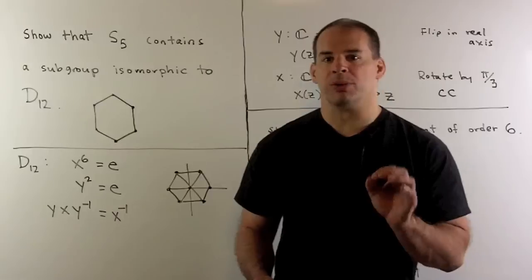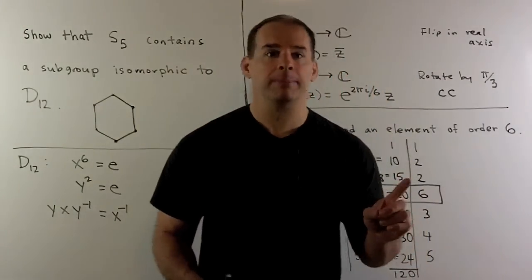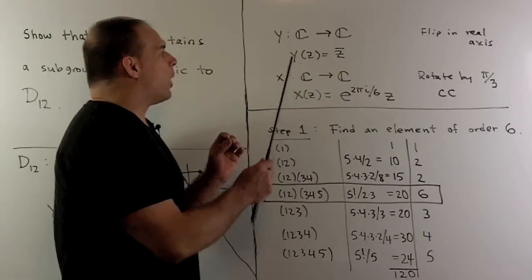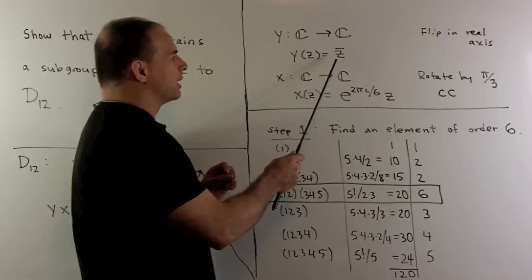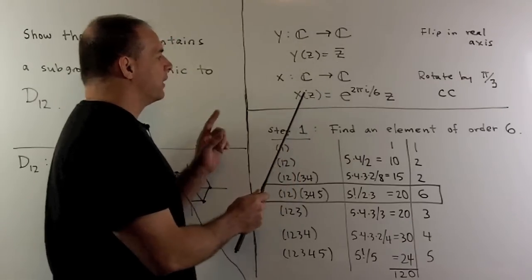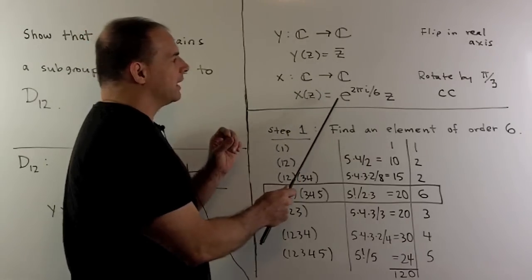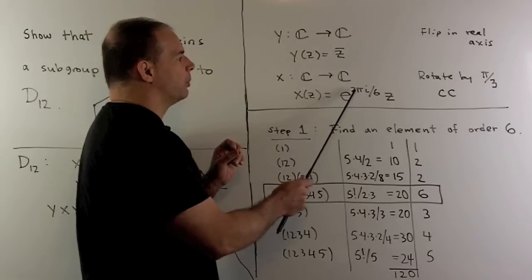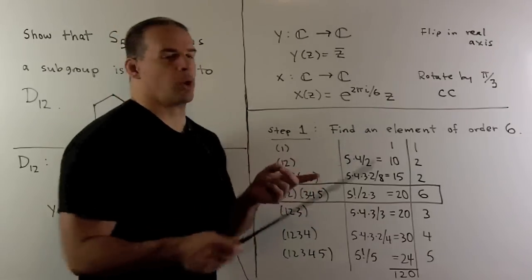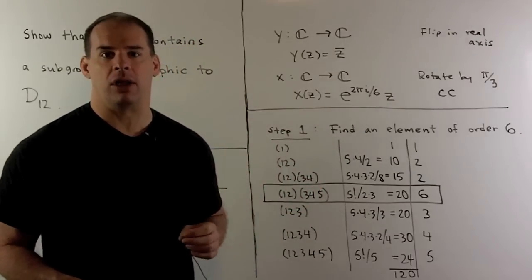If we want to think of things in terms of a group action on the complex plane, then we can think of Y as being the map of complex conjugation. We can think of X as being the map of multiplication by e to the 2πi over 6. We're just going to rotate by π thirds in the counterclockwise direction.